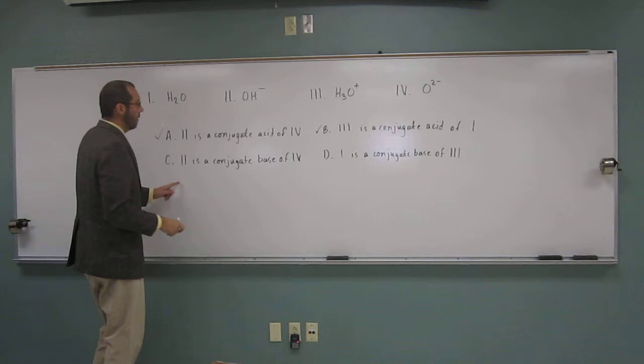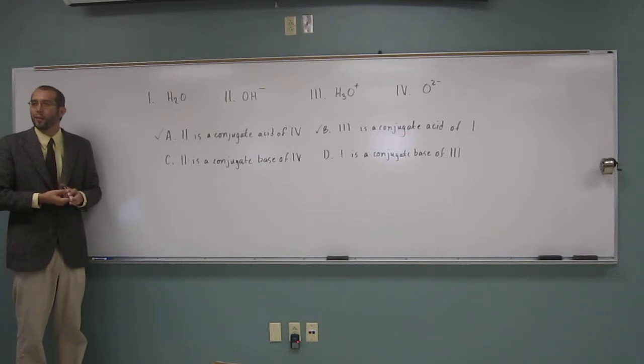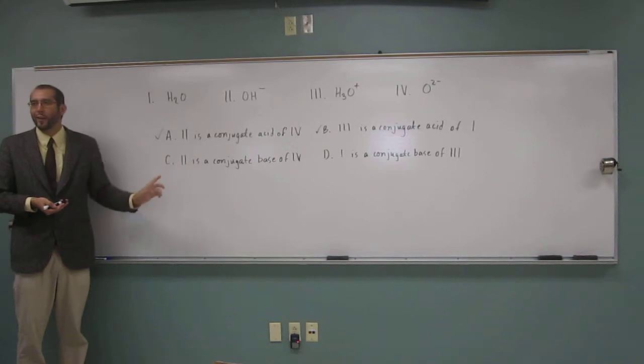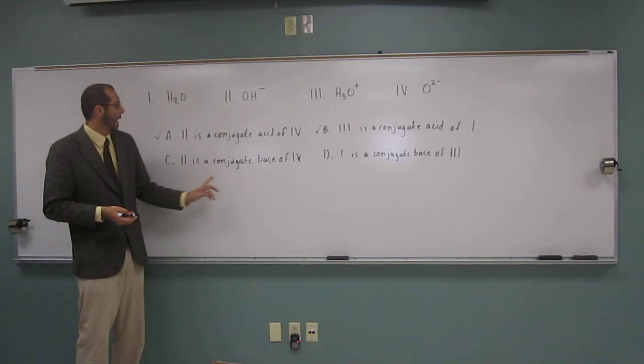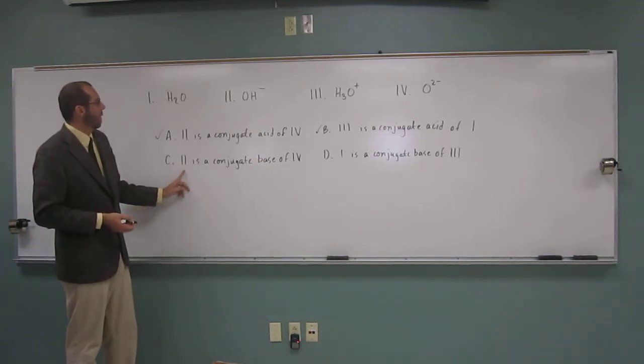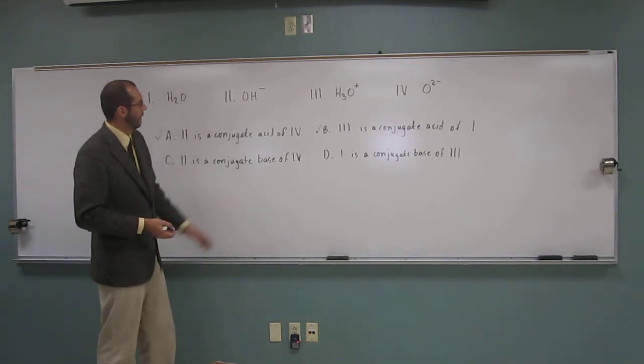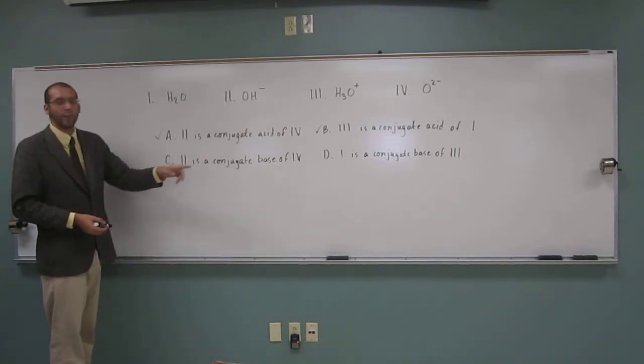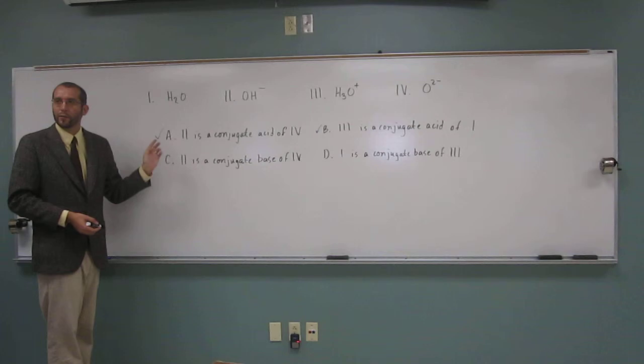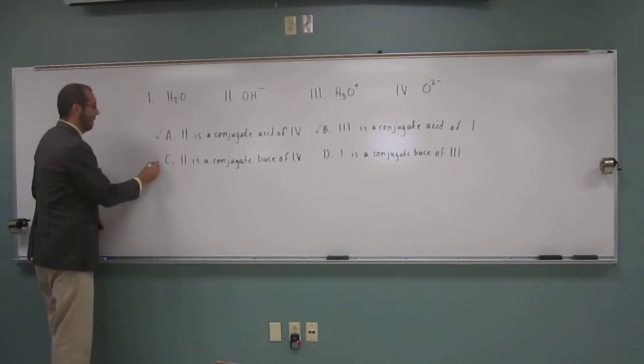So what about C? H2O is a conjugate base of 4, is that possible? If 2 is a conjugate acid of 4, this can't be right. Do you understand? Because a conjugate base, what is the conjugate base of, well, there's no conjugate base of 4, that's the problem. So 2 has a conjugate base, but it's not 4. I mean, it is 4, but that's not the way the question is asked. So that one's incorrect.